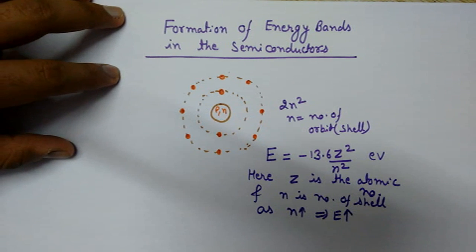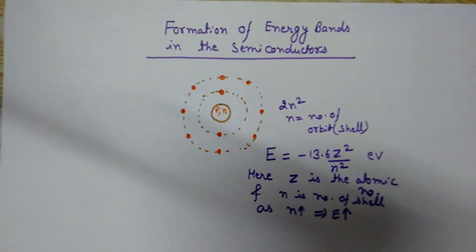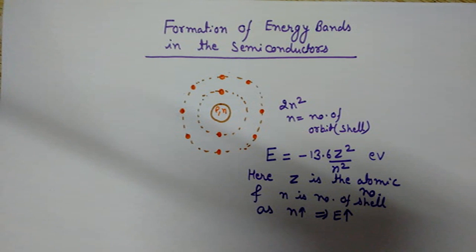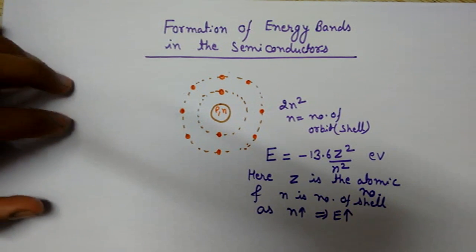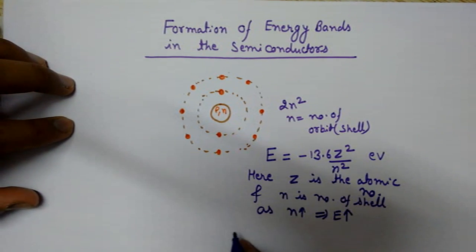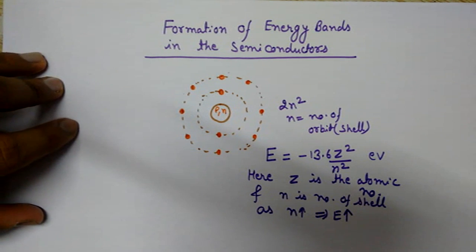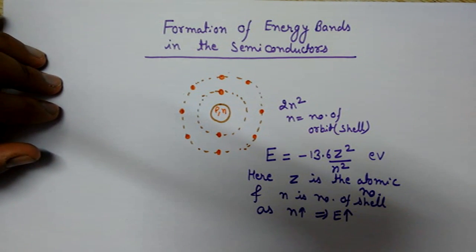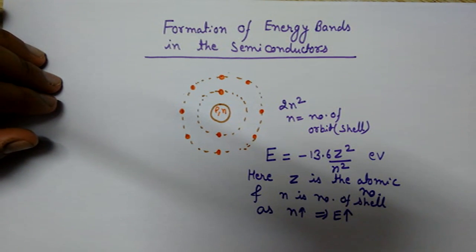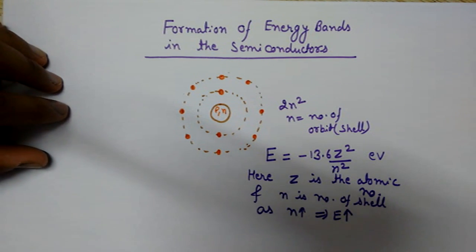As per this formula, electrons in the same orbit of any element have equal energy. If Z is the same and n is the same, then the electrons will have the same energy. Now let's talk about a crystal of a semiconductor — as we know, it has a very large number of atoms having electrons of their own.